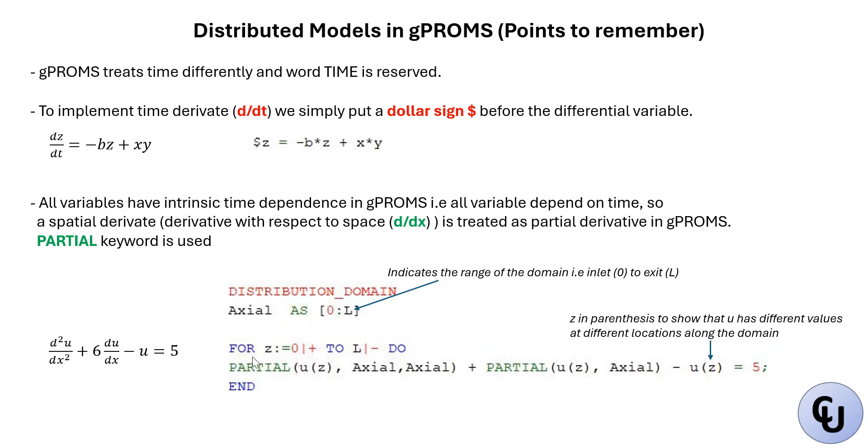To write this equation, because the domain will be discretized, you have to solve the equation at every slice of the domain. That's why you need a for loop that goes through each slice of the domain. For z equals 0, this vertical bar plus excludes the lower bound, and this vertical bar minus excludes the upper bound. The reason is because we are going to specify boundary conditions whenever you are dealing with partial differential equations. We need boundary conditions at the exit and at the inlet. If you don't exclude the inlet and the outlet, then gPROMS will complain that you've already specified what is happening at inlet and outlet.